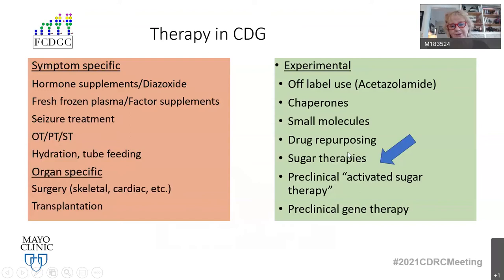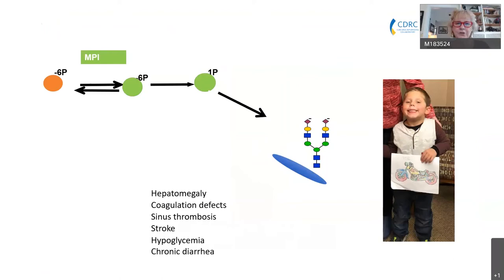Right now, therapy in CDG is mostly symptom-specific and sometimes surgery or transplantation. On the right-hand side, you see all the different potential experimental treatments we would like to evaluate and bring into clinical trials in CDG.